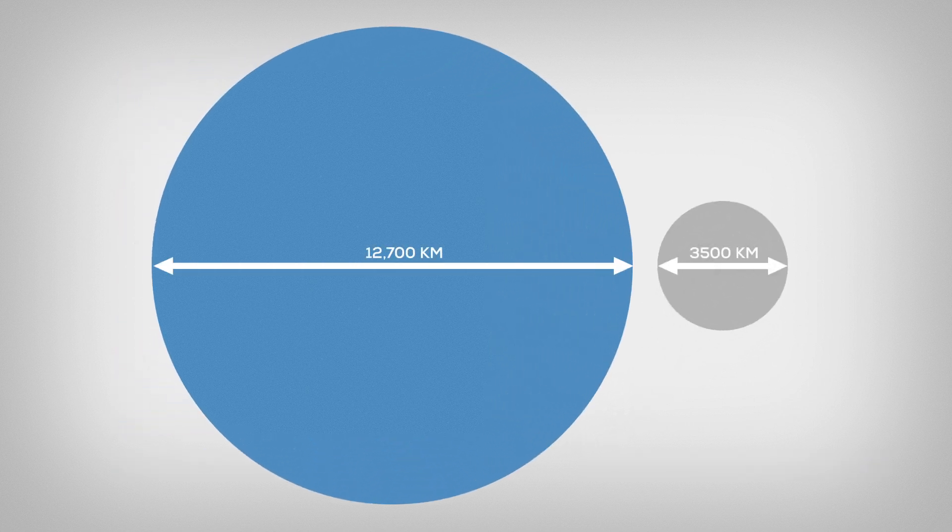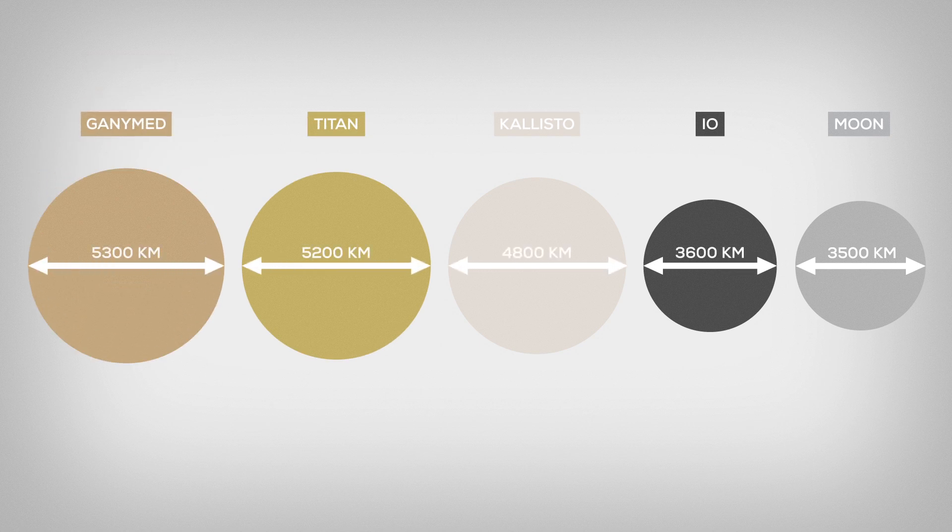But how big is it in relation to Earth? Quite big, actually. Our Moon is the biggest in the solar system in relation to its planet, and it's the fifth largest Moon in the solar system. Quite a bit bigger than the dwarf planet Pluto.